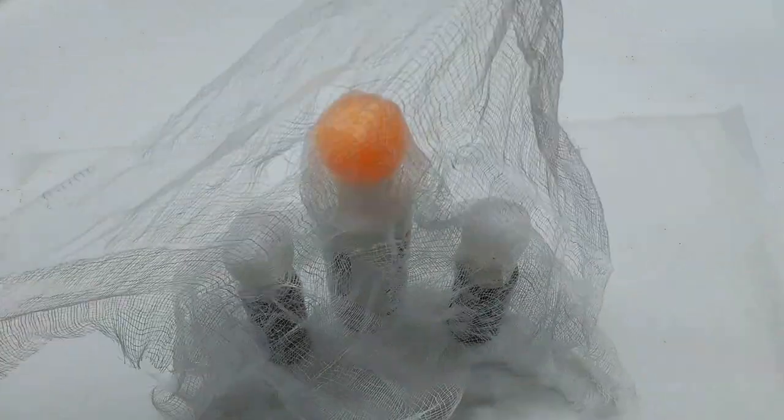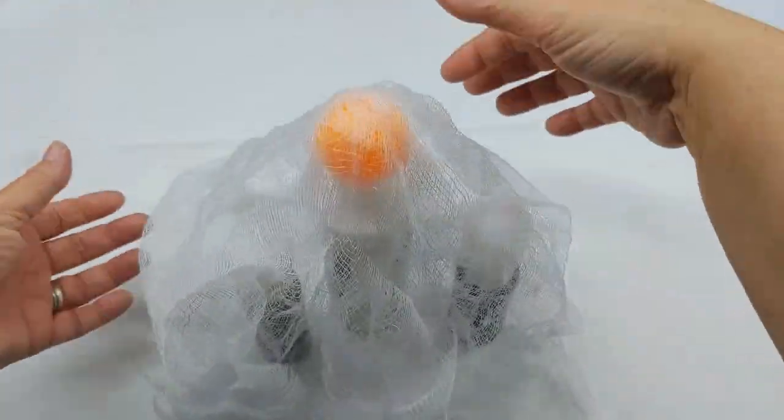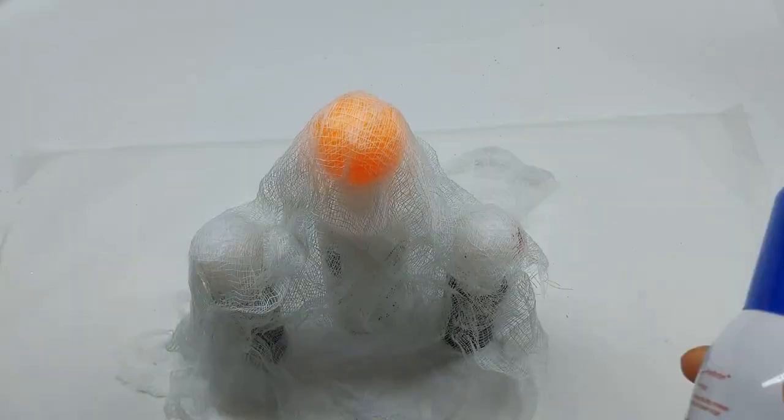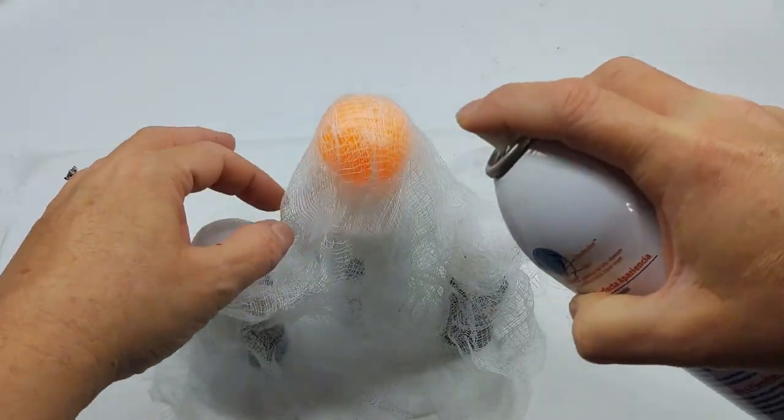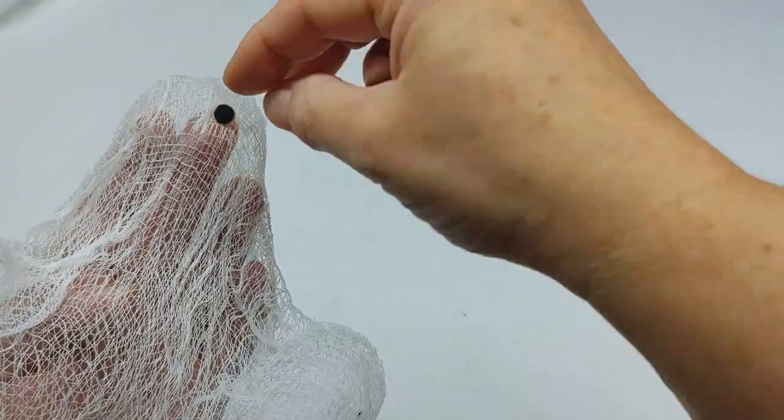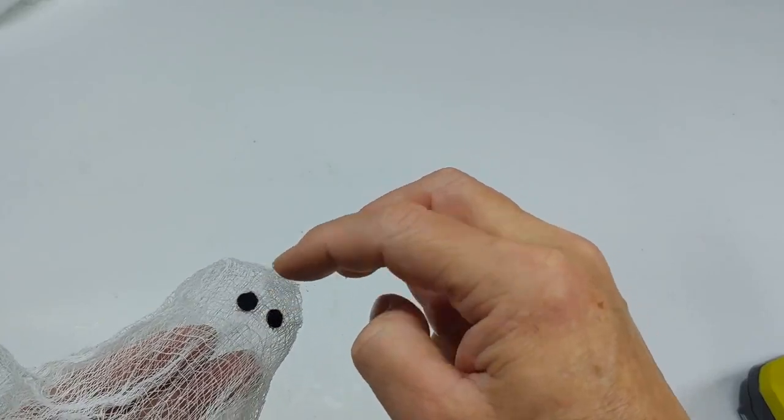To make a ghost, I taped balls to the top of my paint bottles and laid cheesecloth over them. Then I took this heavy starch and gave it a good spray. Once it was dry, I glued on the eyes that I cut from felt.